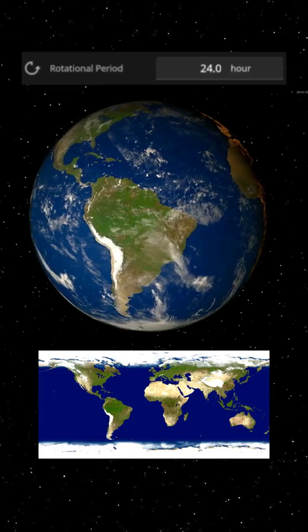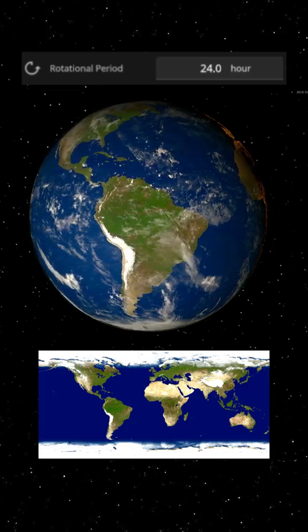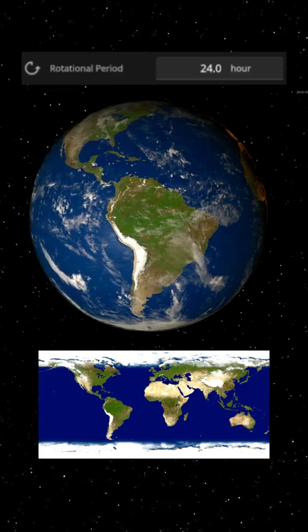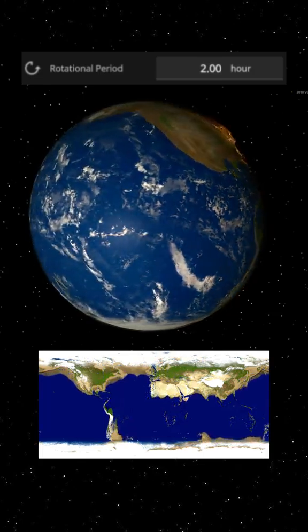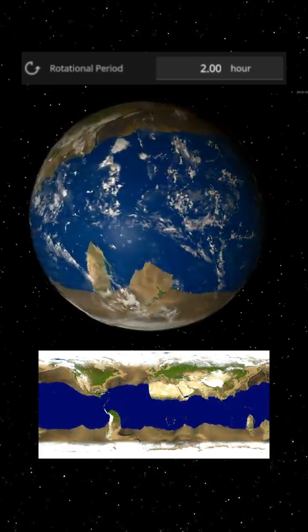What if Earth's rotation speed was 2 hours instead of 24? First, let's speed up Earth's rotation so that a full day lasts just 2 hours instead of 24. With a 2-hour rotation, Earth would be spinning 12 times faster than it does now.